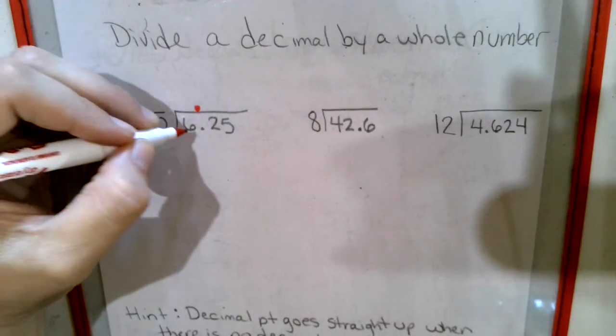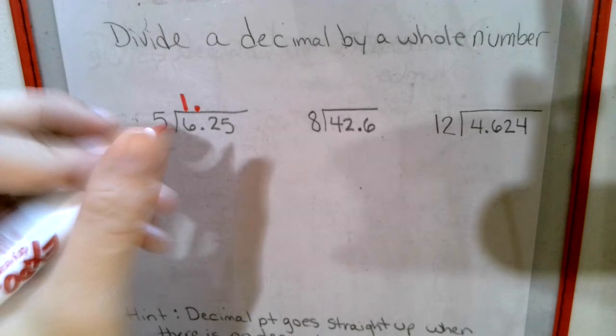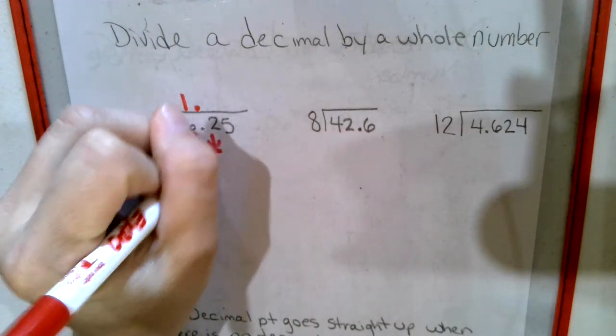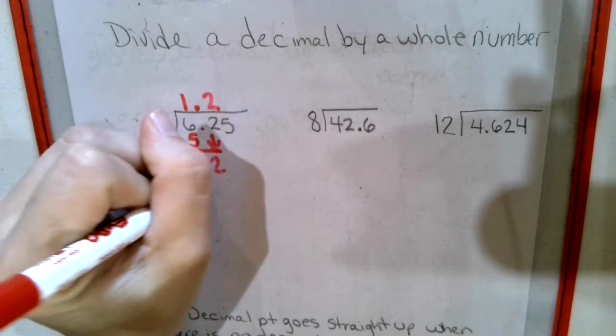So for instance, 5 goes into the 6 once. So the 1 went right over the 6. 5 times 1 is 5, 1 left over. Bring down the 2. 5 goes into 12 twice. I kept it over the 2.